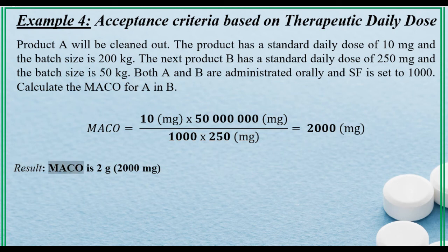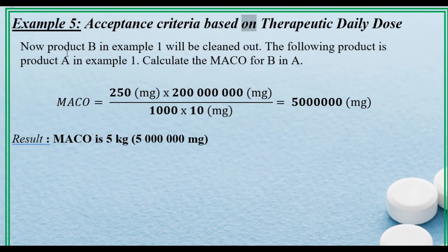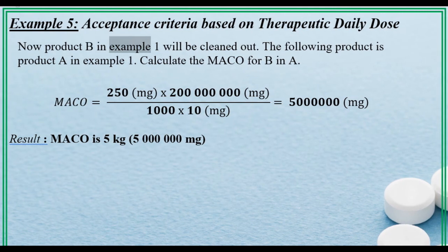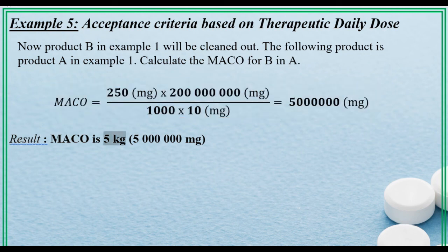Result: MACO is 2 g (2000 milligrams). Example 5: Acceptance criteria based on therapeutic daily dose. Now Product B in Example 1 will be cleaned out. The following product is Product A in Example 1. Calculate the MACO for B in A. Result: MACO is 5 kg (5 million milligrams).